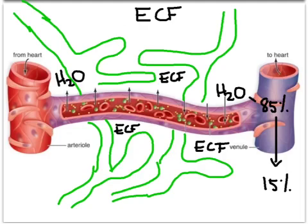The lymphatic system is drawn here in green lines. These are lymph capillaries that surround and run alongside all of the blood capillaries in our body. Their job is to pick up that extra 15% of water released into the ECF — also known as interstitial fluid. Once that water enters the lymph capillaries, we call this fluid lymph. Next we'll review the functions of the lymphatic system and a few other structures.